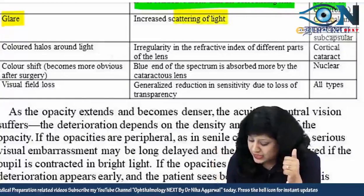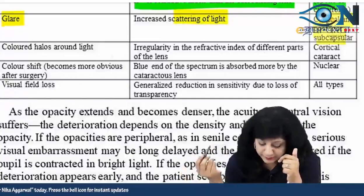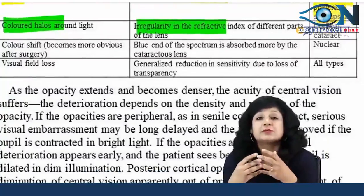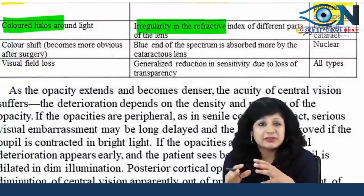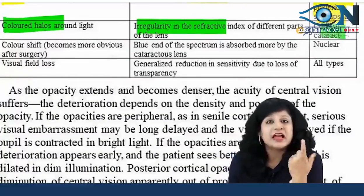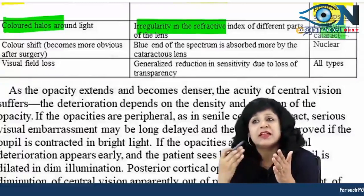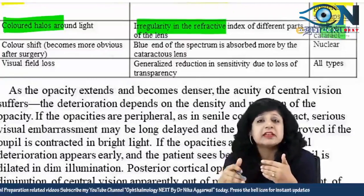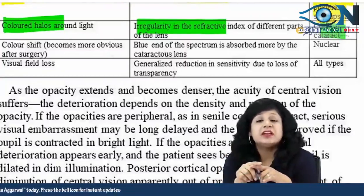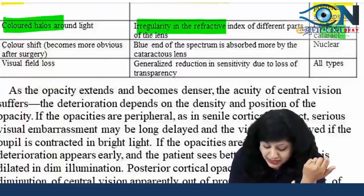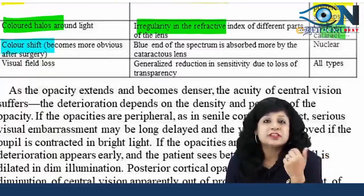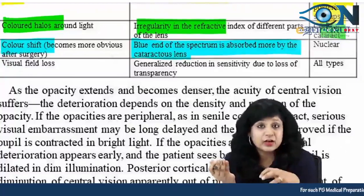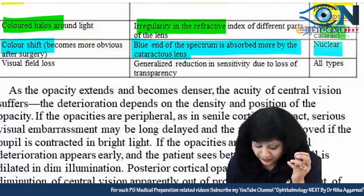Glare is due to scattering of light, and scattering is maximum in cases of posterior subcapsular cataract. Coloured halos are again due to irregularity of refractive index, especially water droplets because of hydration causing scattering of light — this is cortical cataract. Then there is colour shift, which is different from coloured halos. Colour shift becomes more obvious after surgery, as the blue end of the spectrum is absorbed more by the cataractous lens; after surgery there is a sudden shift. This is more common in nuclear cataract.